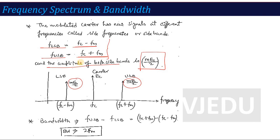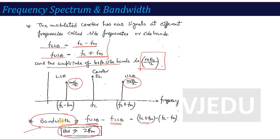Based on the sideband formulas, we can calculate the bandwidth: Bandwidth = Upper Sideband − Lower Sideband = (fc + fm) − (fc − fm). The fc terms cancel, giving Bandwidth = 2·fm. So the bandwidth of an AM signal equals twice the message signal frequency. These are the key parameters: modulation index, sidebands, and sideband frequencies.